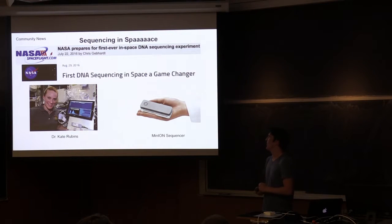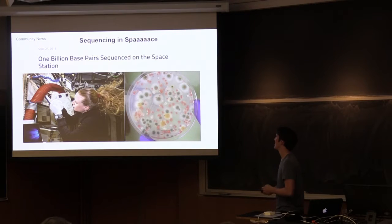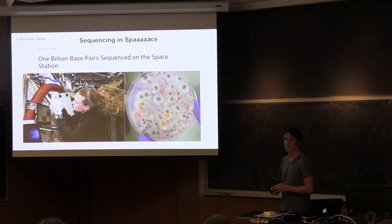Sequencing. Sequencing is cool. And sequencing in space is even cooler. So some of you who were here in July know that I mentioned that NASA was preparing to launch its first-ever DNA sequencer at the ISS. It was an Oxford Nanopore Minion sequencer the size of your hand. And so now they've completed the first DNA sequencing ever on the ISS. And this is the astronaut, Dr. Kate Rubens, who led the study. And as of September, they've reached a billion base pairs sequenced in space. And they're using it to characterize the microbiome of the ISS.